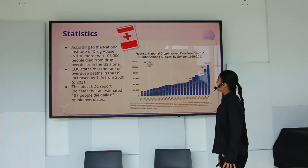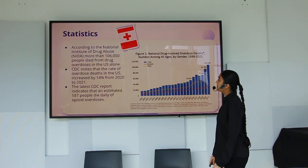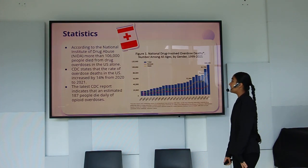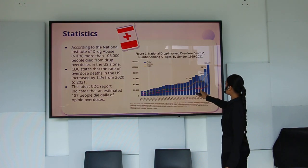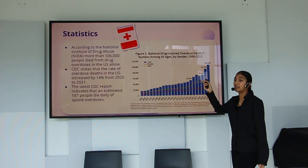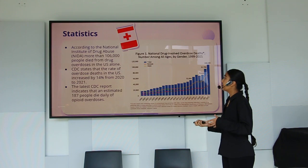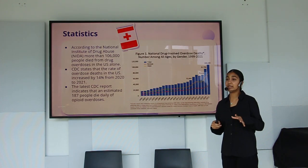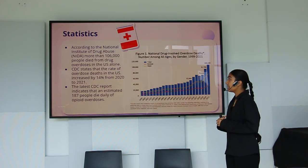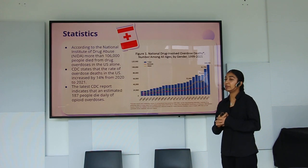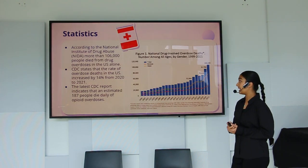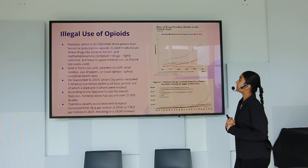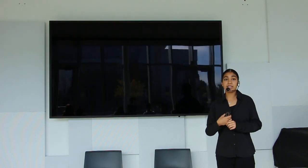According to the National Institute on Drug Abuse (NIDA), more than 106,000 people died from drug overdoses in the U.S. from 1999 to 2021, with significant increases in both male and female deaths. The CDC reports that the overdose death rate increased 14 percent from 2020 to 2021, and an estimated 187 people die daily from opioid overdoses.